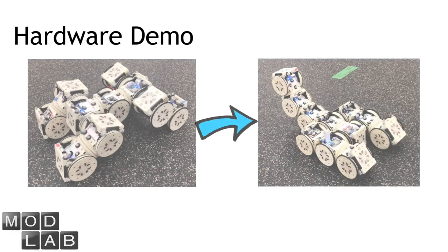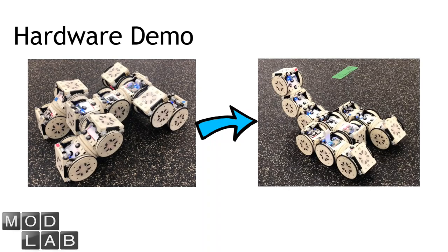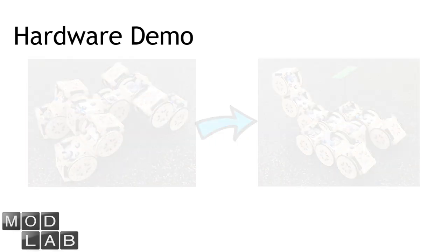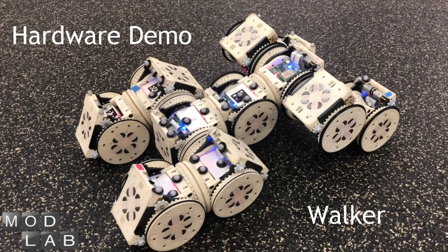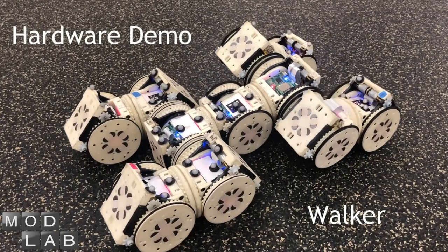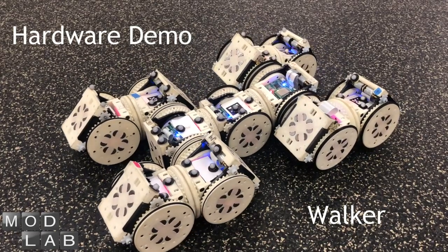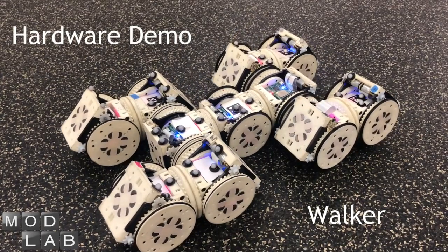The second part of the demonstration shows how we reconfigure from a walker configuration to a vehicle with an arm. We first prepare the walker for the execution of the reconfiguration plan.